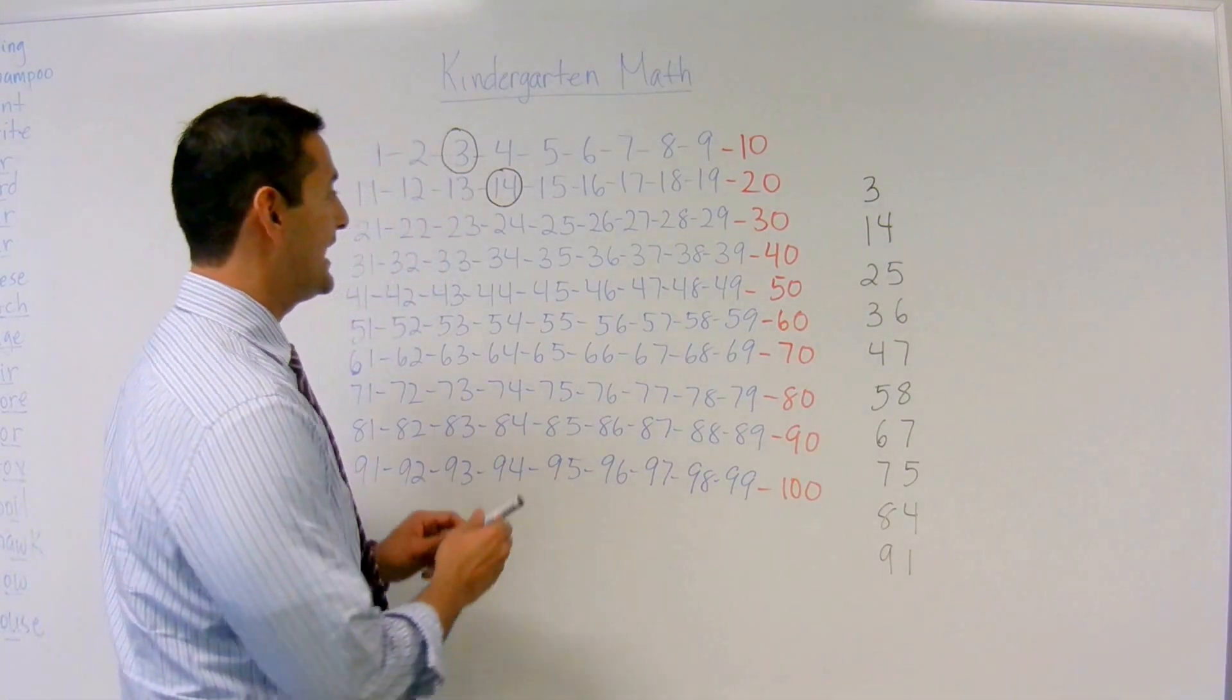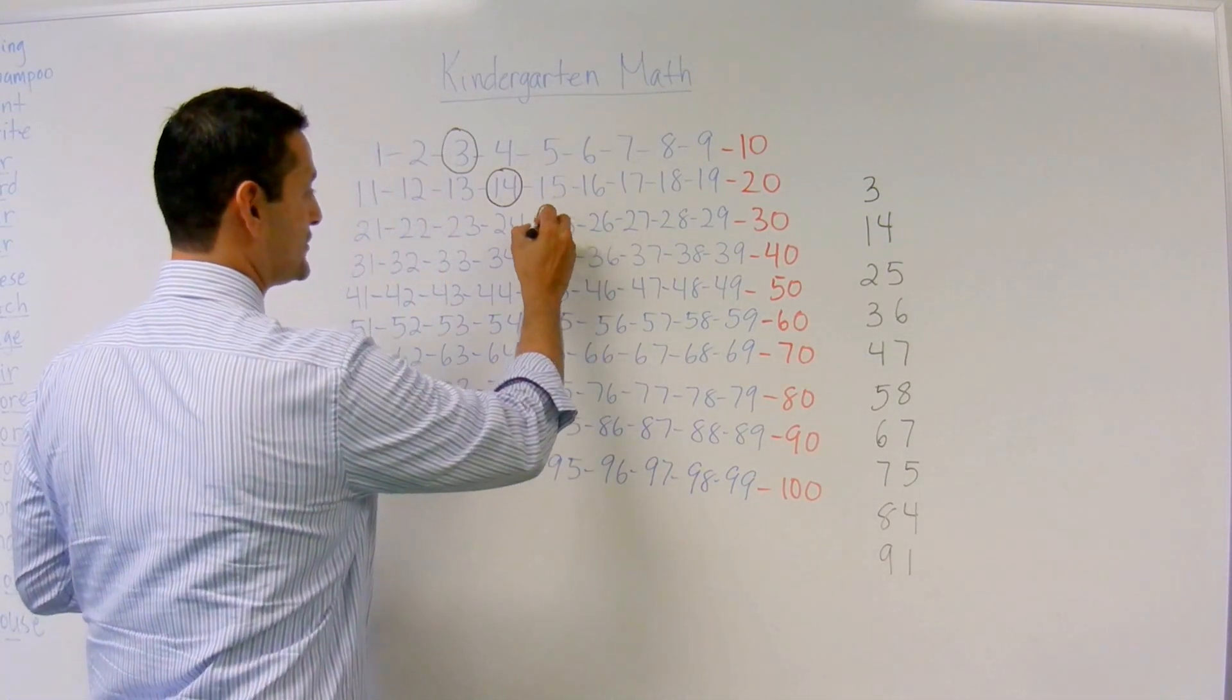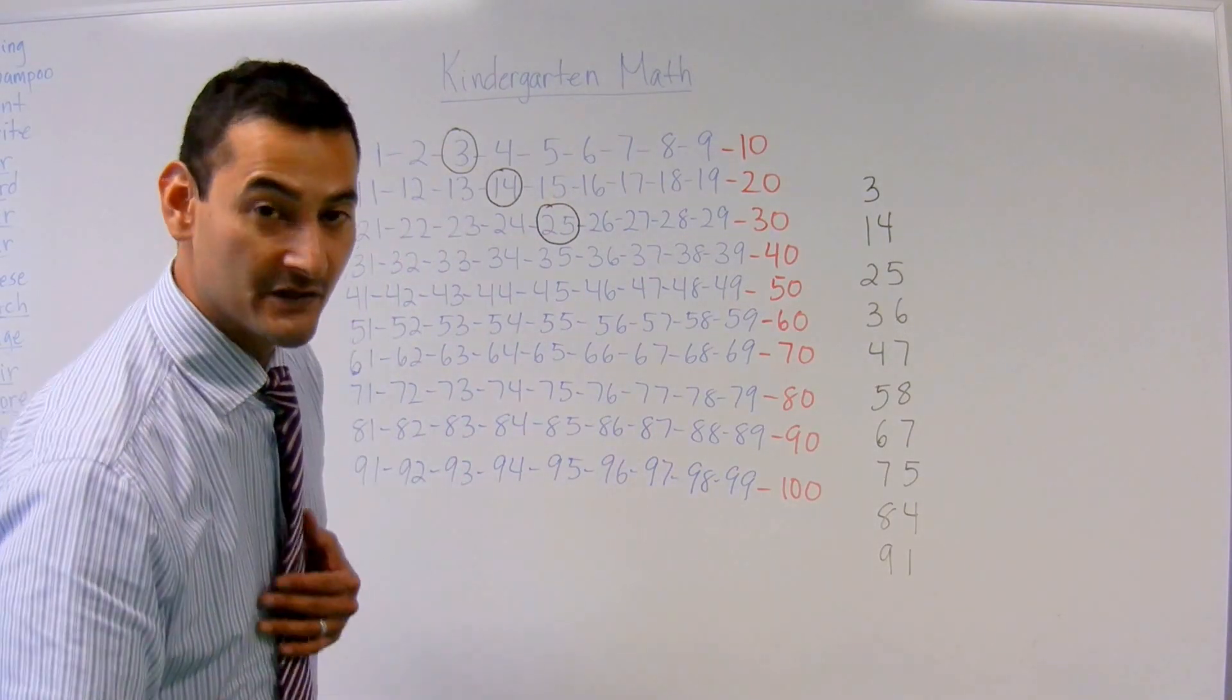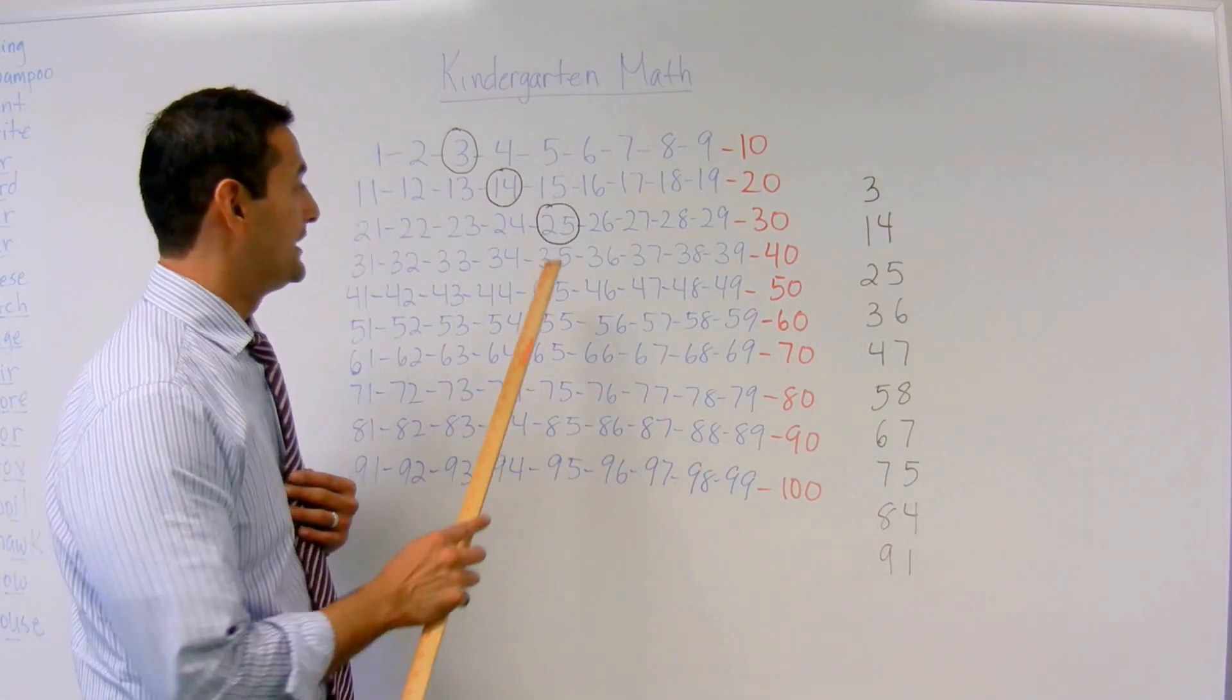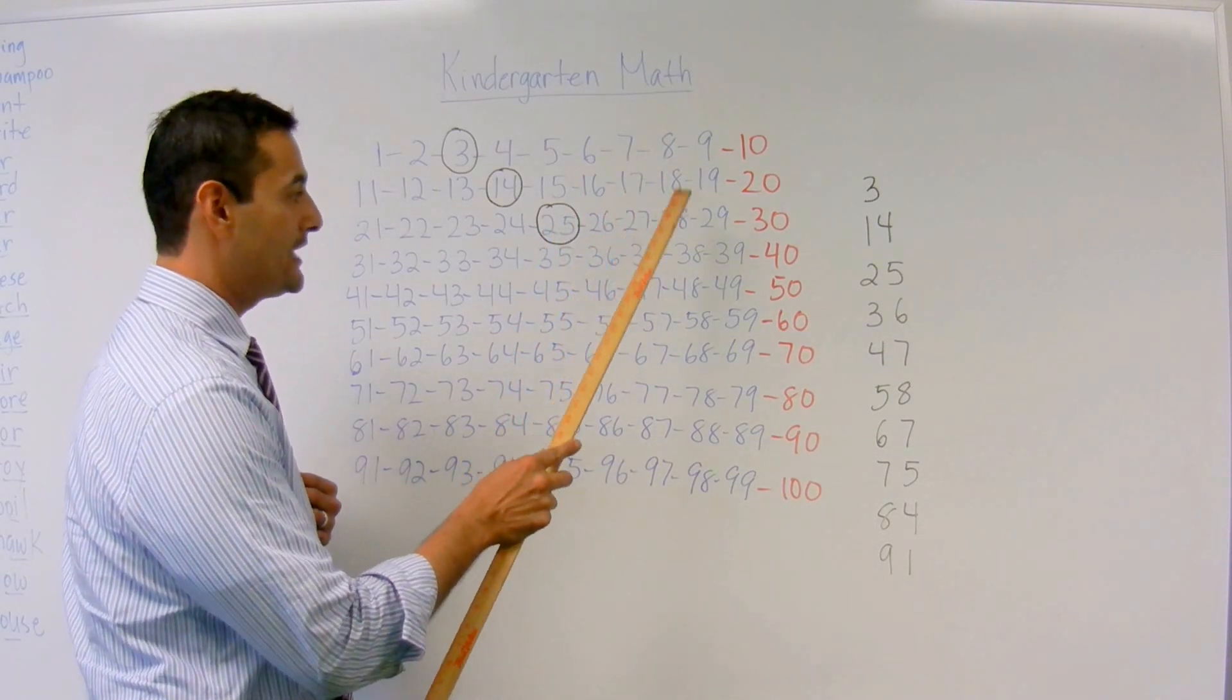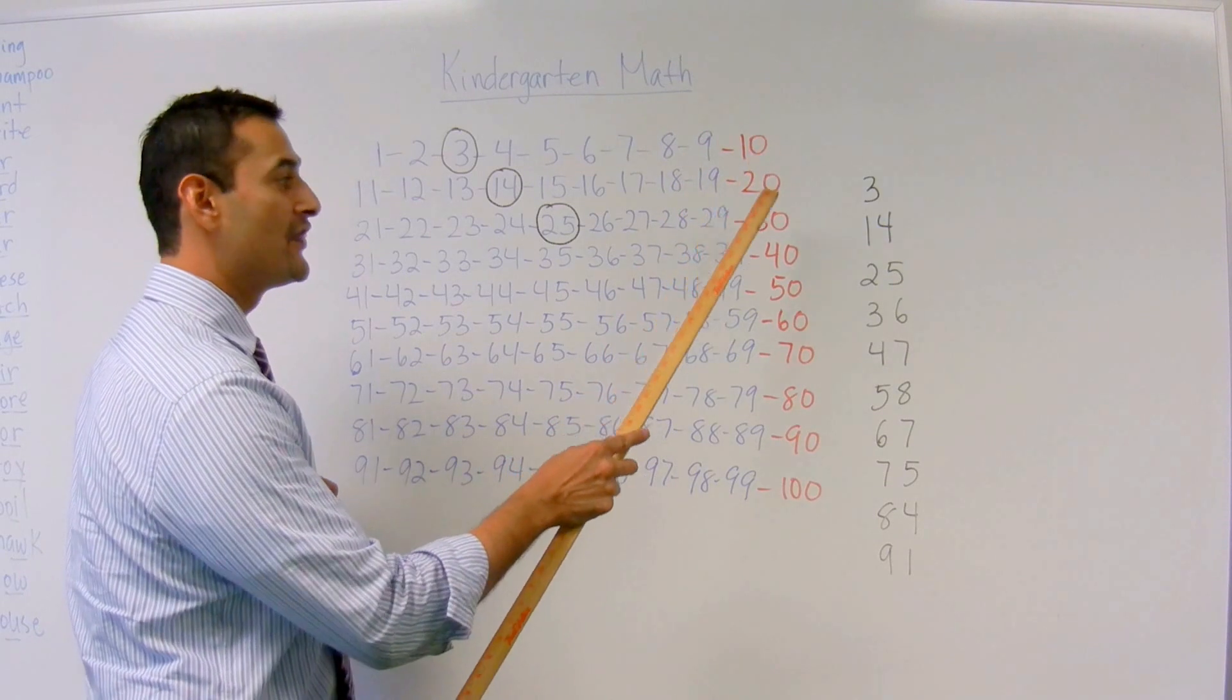Now let's take a look at number 25. Here's 25. I'm going to circle 25, and we're just going to count up a few numbers. Let's go ahead and do it. 25, 26, 27, 28, 29, 30. Wonderful.